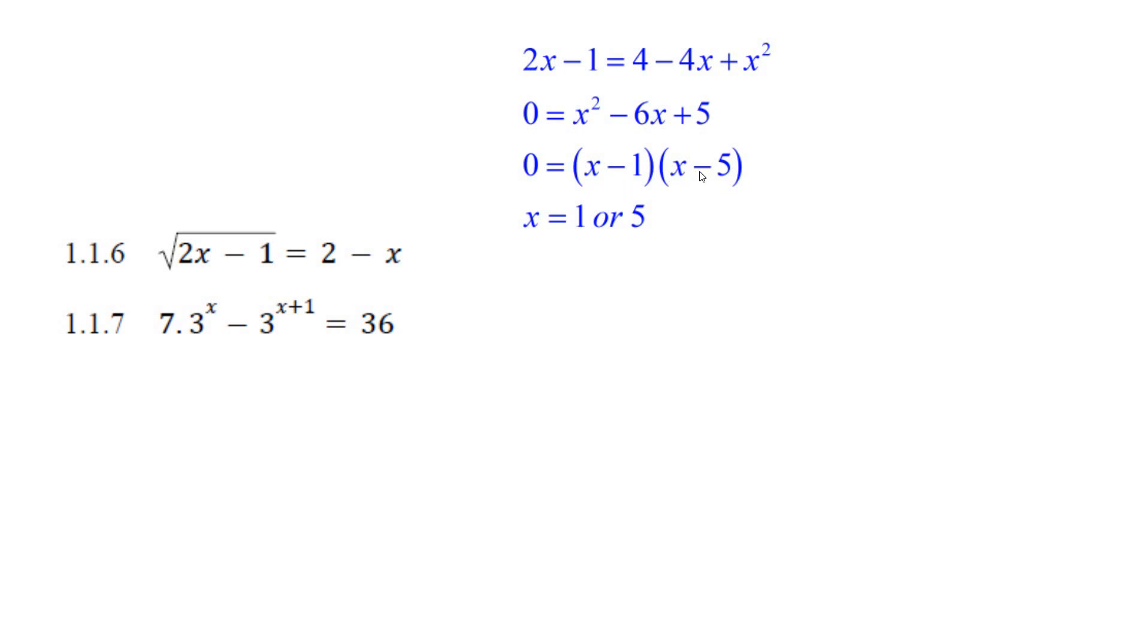Factor it. Put down two brackets. Minus 1 times minus 5 is plus 5. There's your minus x minus 5x. That gives you the minus 6x. You're looking at x being 1 or 5.